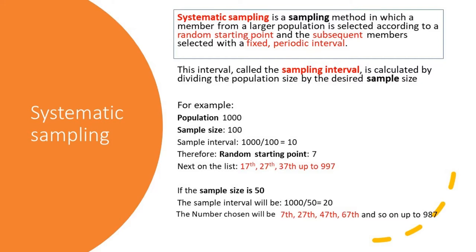Suppose the population is 1000 — the population of a school, for instance — and we want a sample size of 100 out of this 1000. We take 1000 divided by 100 and get 10. In other words, the interval between each sample being chosen will be 10. We start at a random starting point: from the first 10, we draw a lot and see which number comes. Suppose the number is 7, so we start at 7.